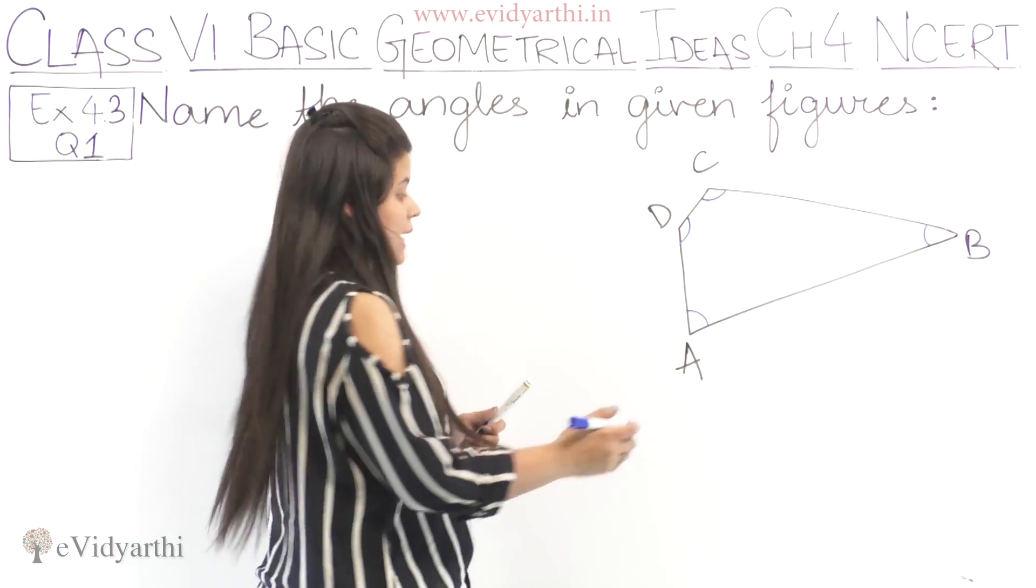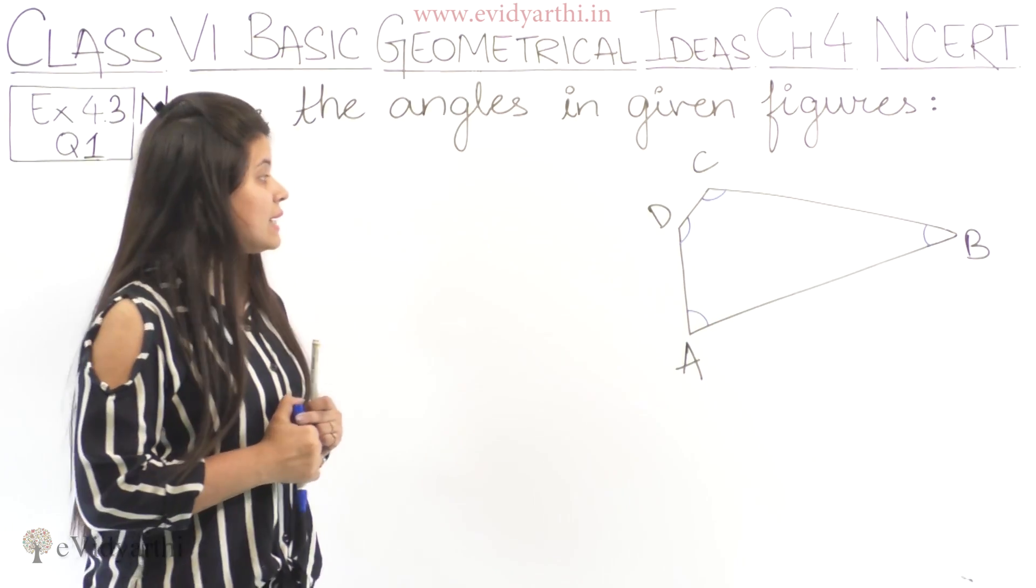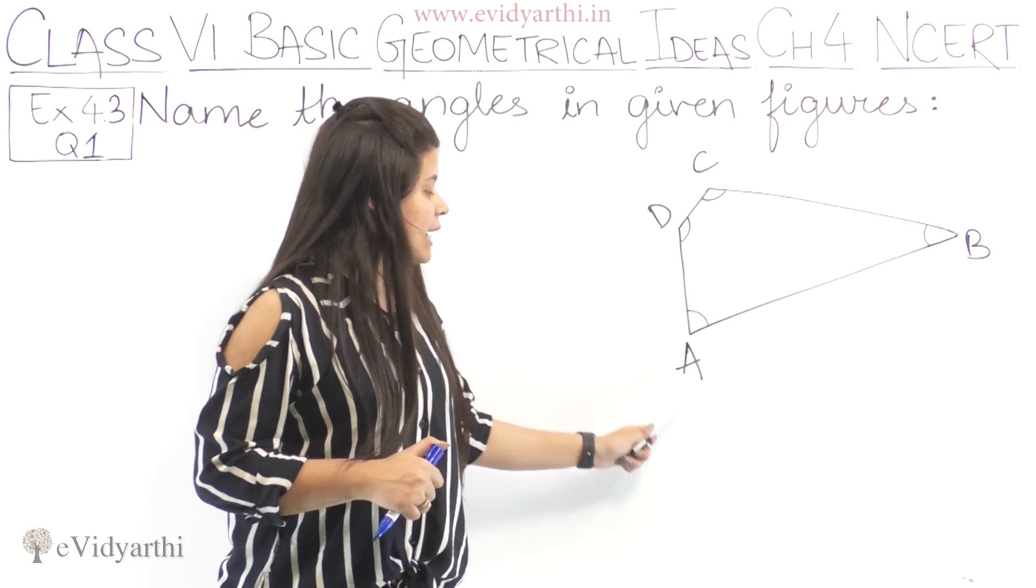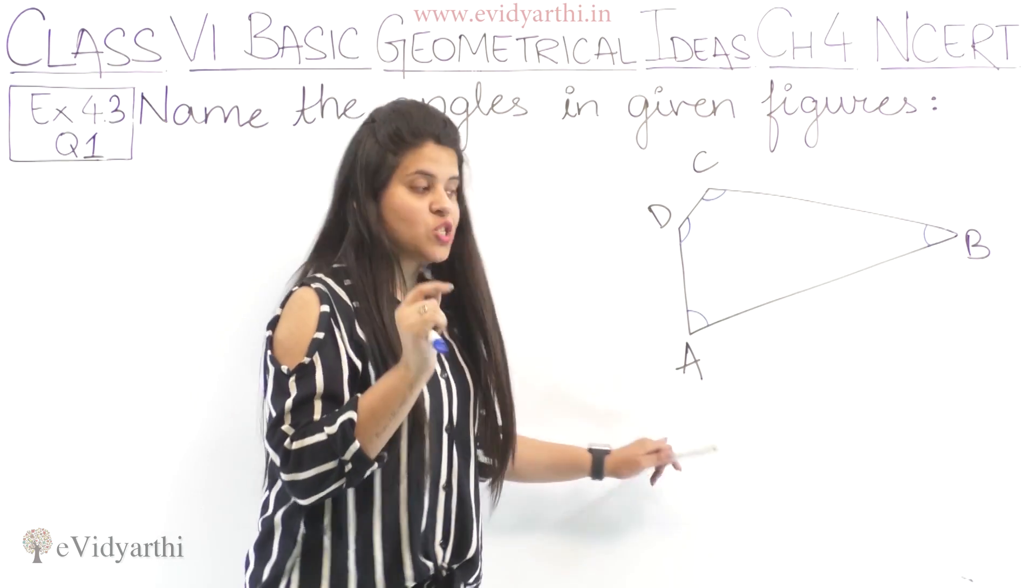Now, how to write the names of angles? If you want to write angle A, we write it as B, A, C or D, A, B. The angle we're talking about comes in the middle.